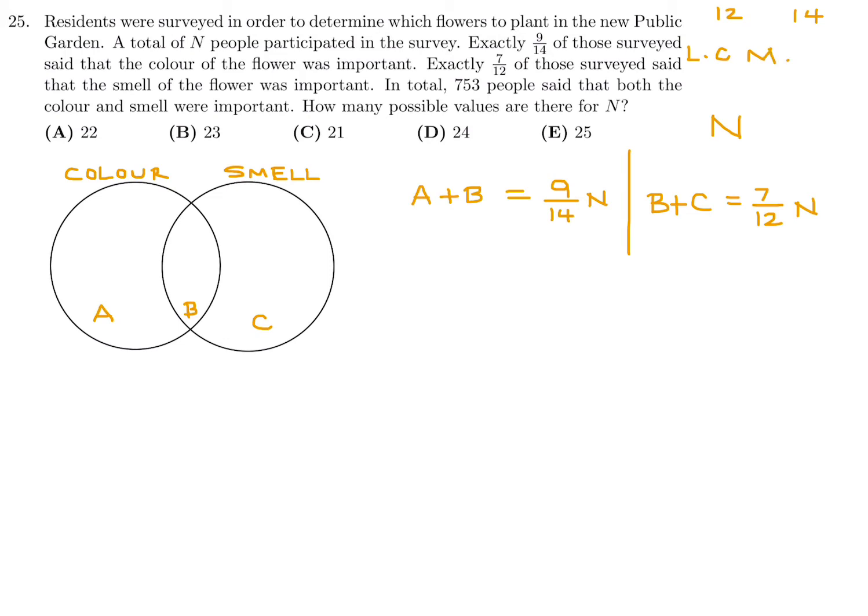Well, 12 is going to be 2 times 2 times 3, and 14 is 2 times 7. So the least common multiple is 2 times 2 times 3 times 7, and that's 4 times 21, which is 84. So n is of the form 84K. It's got to be some multiple of 84. That's the only way we can make that an integer and that an integer because a, b, and c are integers. Okay, so now that that is established,